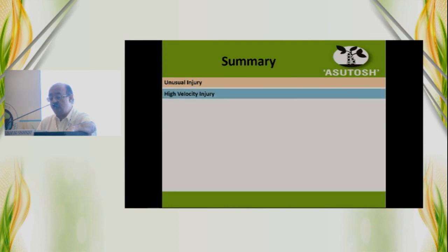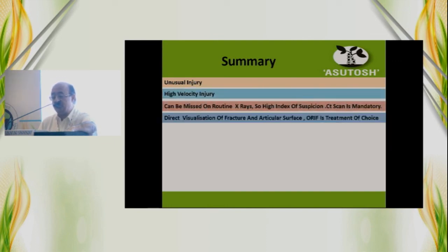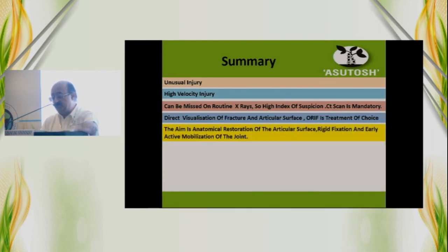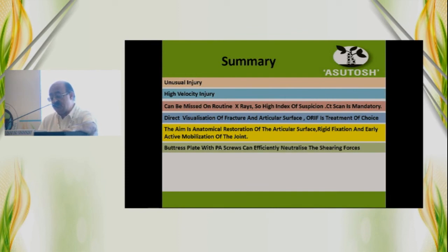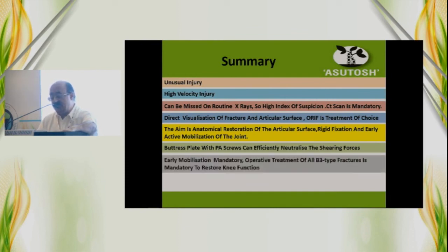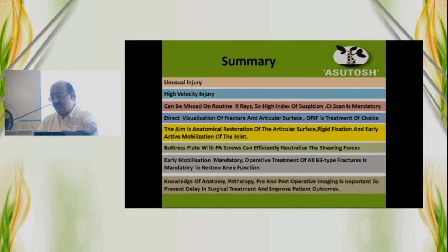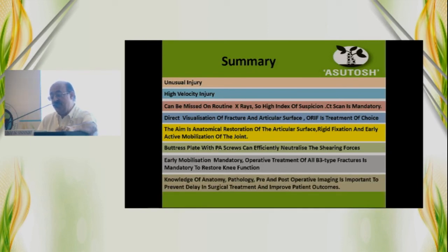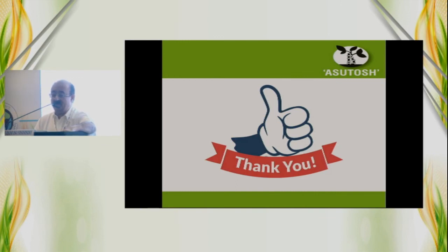To summarize: this is an unusual, high-velocity injury that can be missed, so a CT scan is mandatory. Open reduction is the treatment of choice. As with any joint-involving fracture, aim for anatomical reduction, buttress with a plate if needed, and early mobilization is mandatory. Knowledge of the anatomy and the rate of missed diagnosis is important.